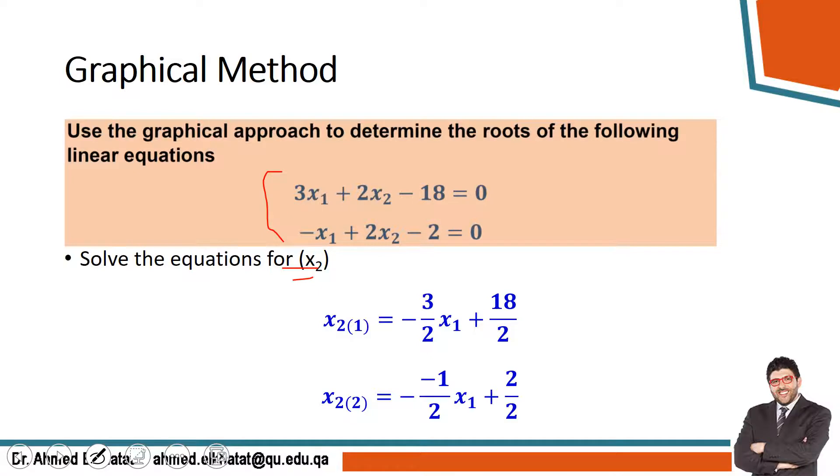So x2 for equation 1 is minus 3 over 2 x1 plus 18 over 2. And for the second equation, it will be minus minus 1 over 2 x1 plus 2 over 2.